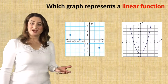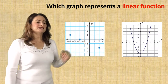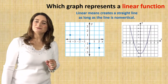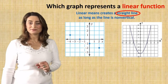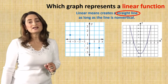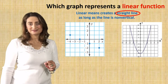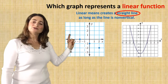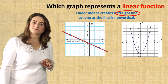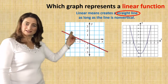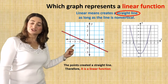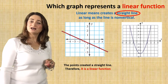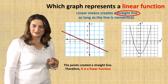Here's an example — which graph represents a linear function? Remember, linear means it creates a straight line, as long as that line is non-vertical. So look at this example: if you connect those dots, does it make a straight line? It did. So this relation is a linear function because it created a straight line.